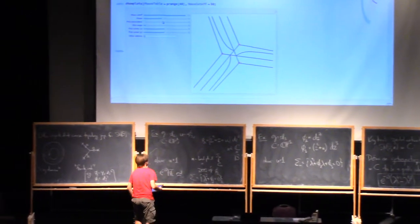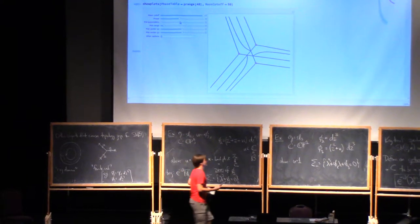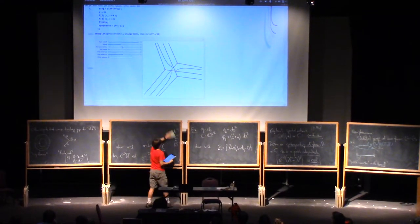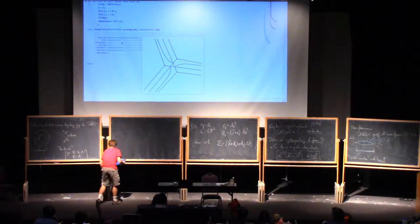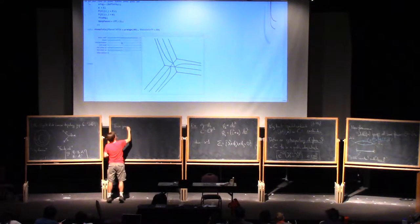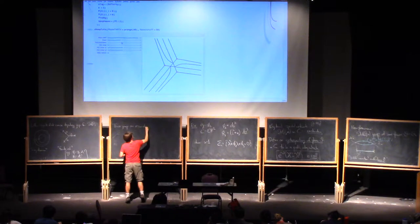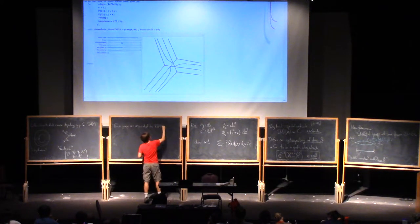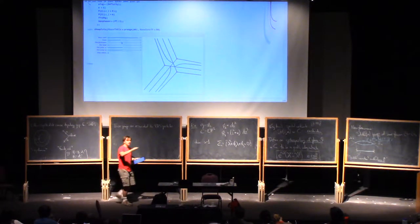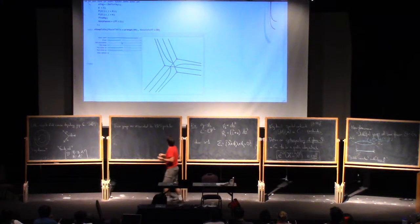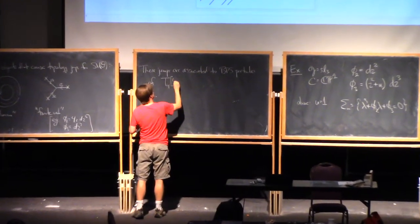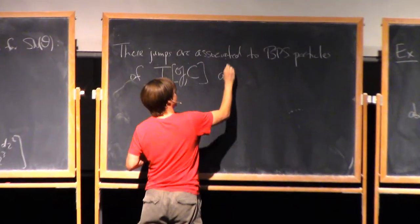Now, the importance of these jumps for us well, they're gonna be important in our scheme for setting Higgs bundles, but first, they're physically important. So these jumps are associated to BPS particles. So again, BPS particles. But this is a kind of BPS particle that we haven't talked about until this moment. So, so far, we've been always talking about things that live on the little string. But now, we're gonna talk about BPS particles of the full four-dimensional theory in its vacuum U.